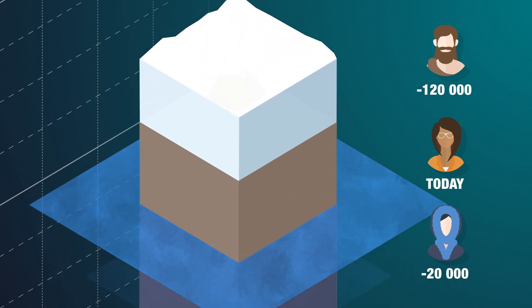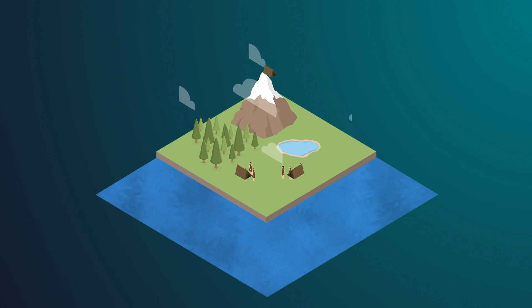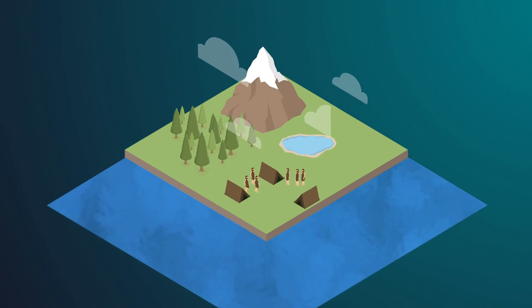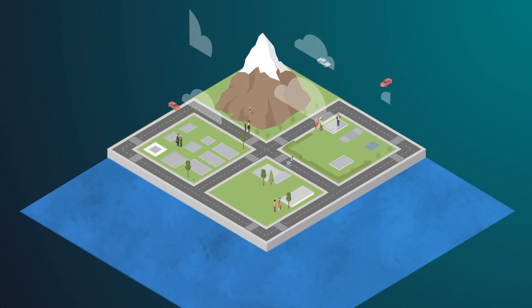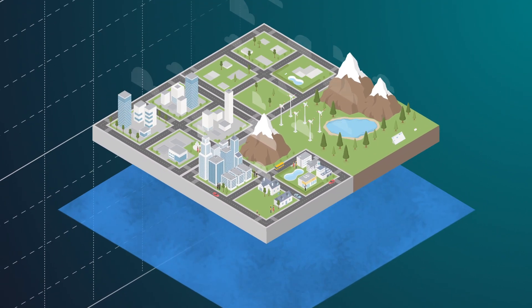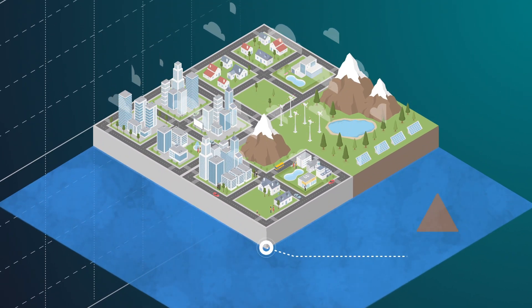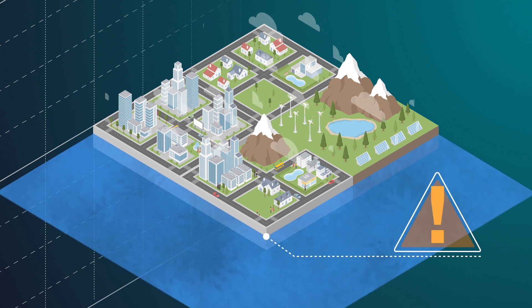But while moving a camp wasn't a big deal for our ancestors, moving today Venice or New York is a different story. This very high social risk of sea level rise to human coastal settlements is the reason